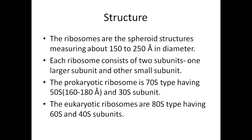When we discussed cell biology, we talked about two different types of cells — prokaryotic and eukaryotic. One major difference is the type of ribosome present. Prokaryotic cells have 70S ribosomes and eukaryotes have 80S ribosomes. In prokaryotes, the 70S ribosome consists of two subunits: the 50S subunit and the 30S subunit. In eukaryotes, the 80S ribosomes are made up of 60S and 40S ribosomal subunits.